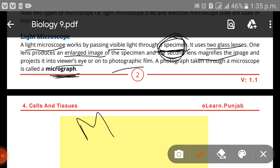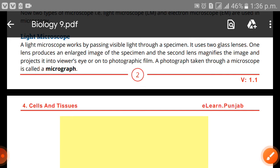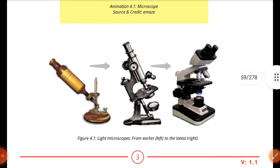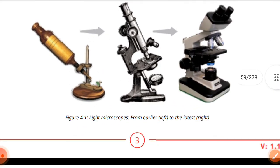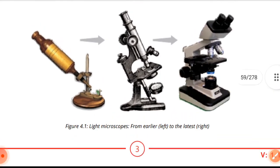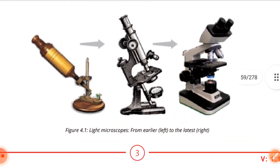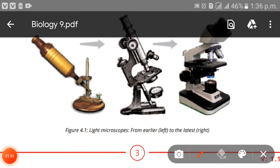There are two lenses — one's work is to enlarge the image and one's work is to magnify it. First it is enlarged, then it is magnified, and then we can see it as a photographic film.